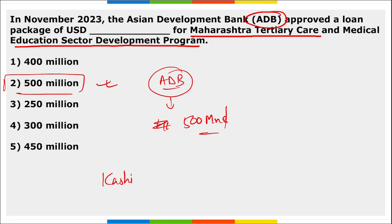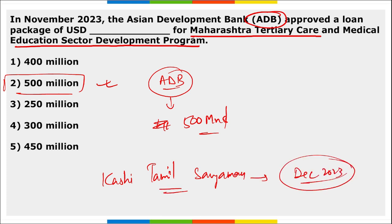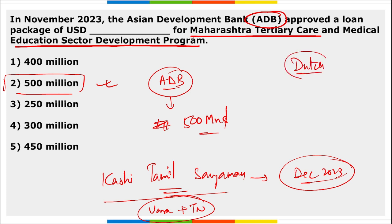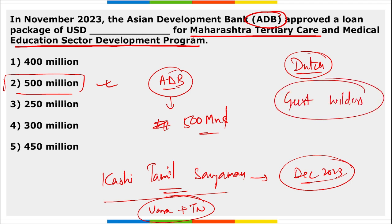Then, Kashi Tamil Sangam is scheduled in December 2023, and it will encourage cultural exchange between Varanasi and Tamil Nadu. Next: who became the new Prime Minister of the Netherlands? That is Geert Wilders, who became the new Prime Minister of the Netherlands.